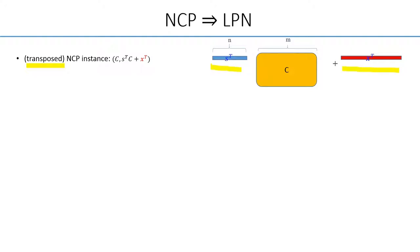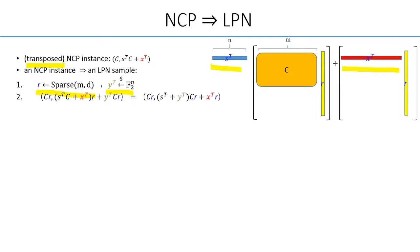We know from previous work that how to transform the NCP instance into a single LPN sample. That is, we sample a random R from the sparse distribution that has length M and roughly Hamming weight D. And we also sample a uniformly random Y. Then we multiply the noisy codeword with the sparse vector R, such that hopefully CR will be uniformly random and X·R will be the biased noisy bit as in the LPN.